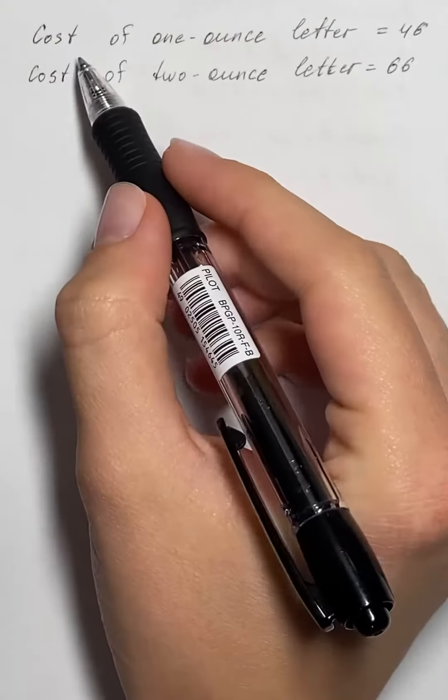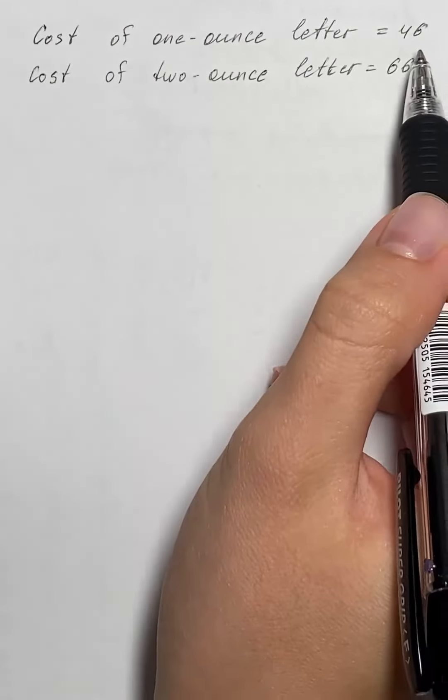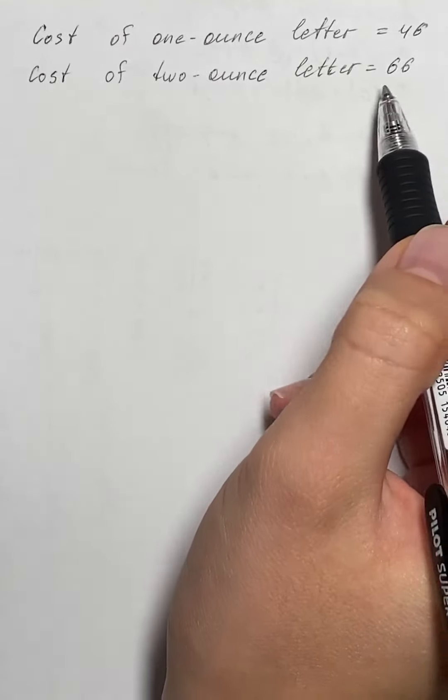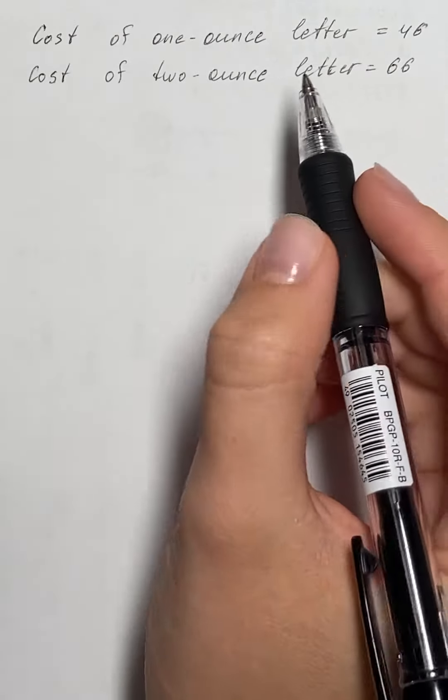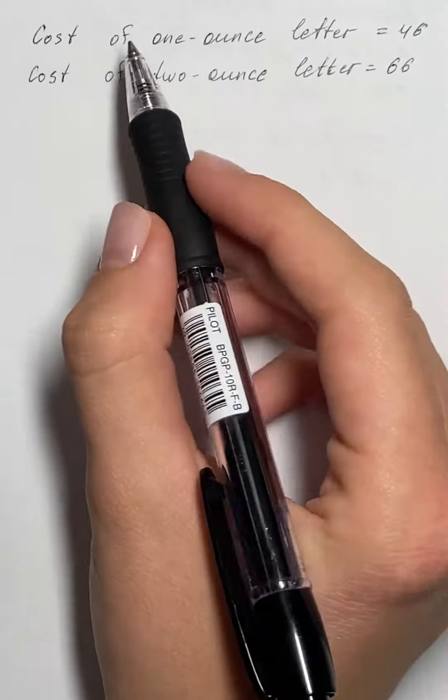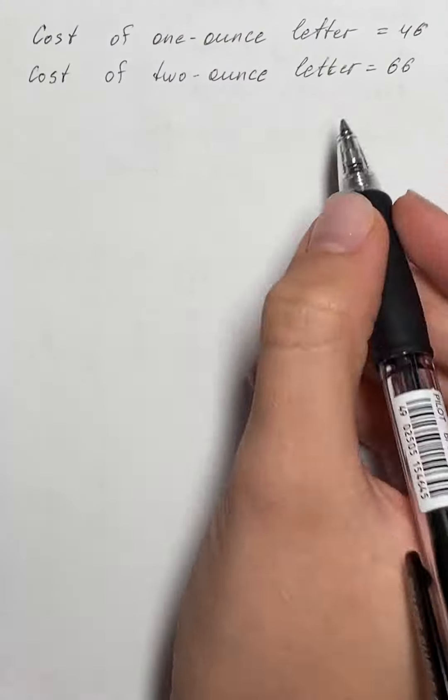So we were given that cost of one-ounce letter is 46 and cost of two-ounce letter is 66. And we need to find the indicated ratio of cost of one-ounce letter and two-ounce letter.